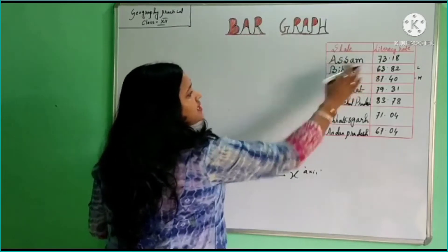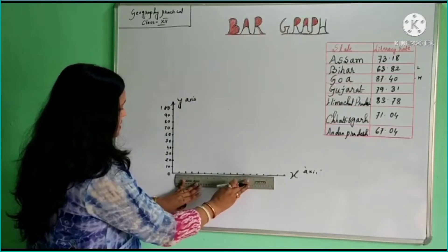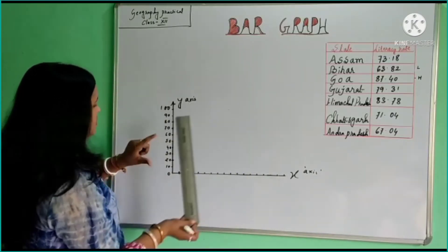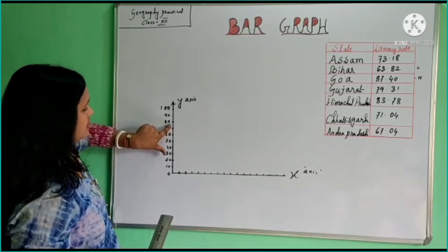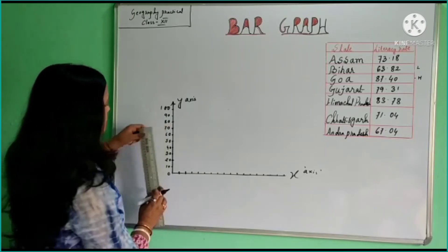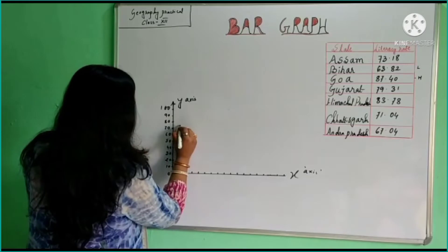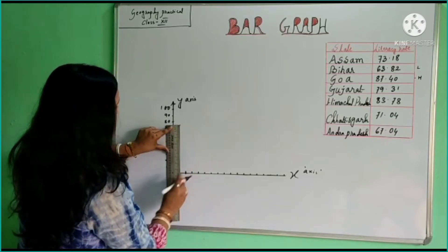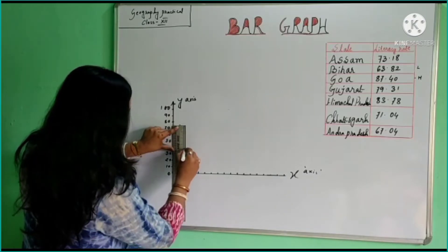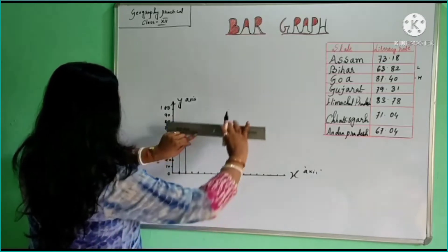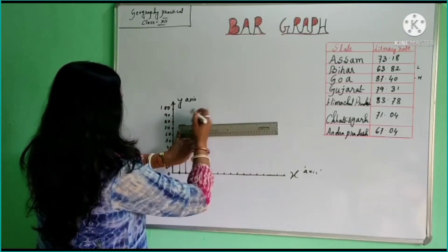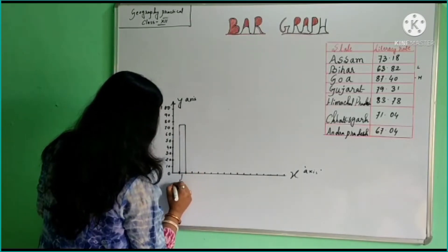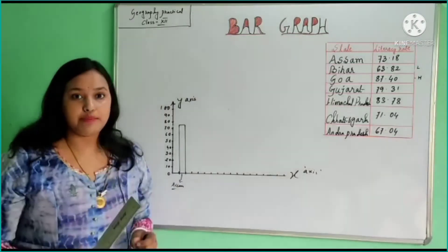For Assam, our data is 73.18. I just take one centimeter width here, then we draw up to 73.18. Since 70 is here, our 73 is just above it. So we draw the first bar up to 73.18, and the width of the bar is one centimeter. This is our first bar, which represents the state Assam.